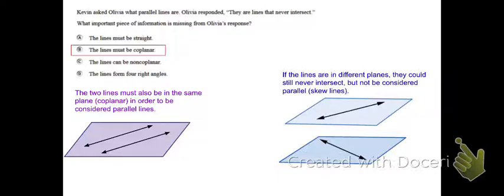The ones in blue are an example of lines that never intersect. However, they're not parallel because they're on different planes. These are skew lines.